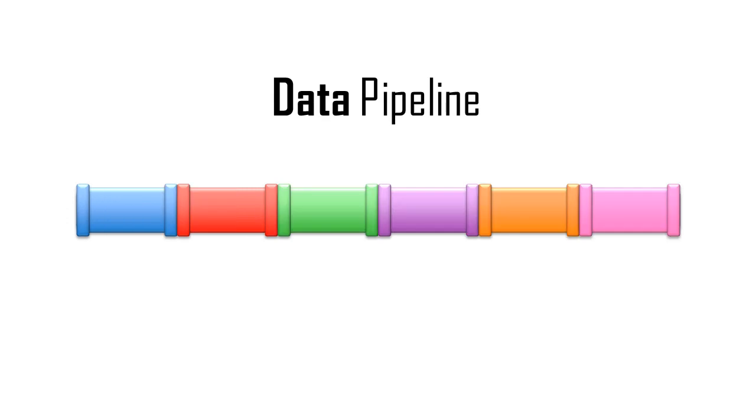Since there are many kinds of pipelines in the computer industry, we say 'data pipeline' instead of just 'pipeline.'